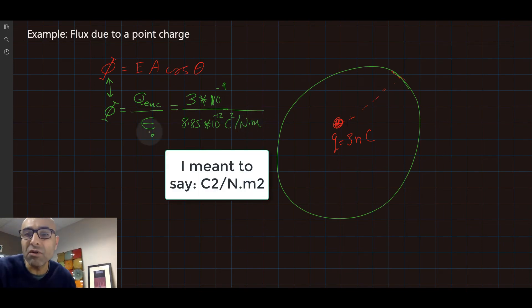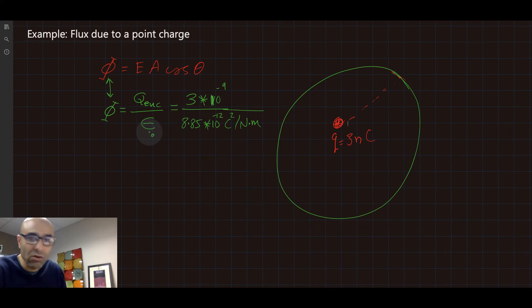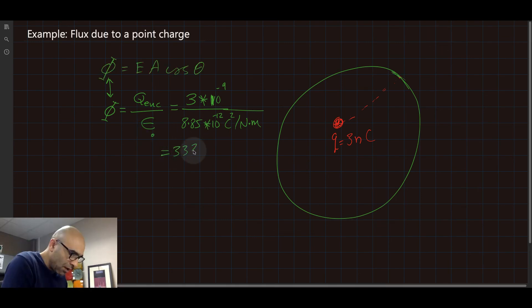Usually in an MCAT or any national test or in any local test, this value would be given to you. So if you just do some calculations, you will be able to find 338.98 Newton per Coulomb dot meters squared. So this is the flux that is going through this sphere due to this point charge.